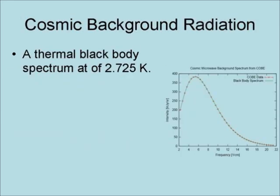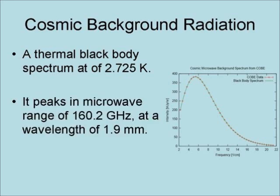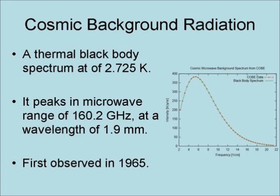Cosmic background radiation is a thermal black body spectrum equivalent to a temperature of 2.725 Kelvin. It is very uniform in every direction. It peaks in the microwave range of 160.2 GHz at a wavelength of 1.9 mm. It was first observed in 1965 by Arno Penzias and Robert Williams at the Bell Telephone Laboratories in Murray Hills, New Jersey.